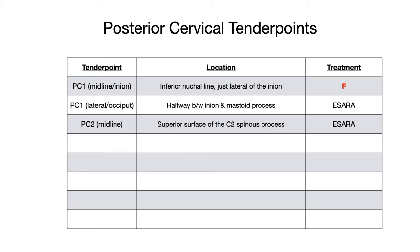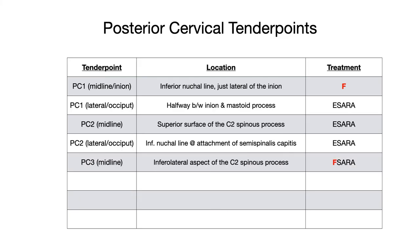PC2 midline is located on the superior surface of the C2 spinous process, and the treatment is E-CERA. PC2 lateral or PC2 occiput is located on the inferior nuchal line at the attachment of the semi-spinalis capitis muscle, and the treatment is E-CERA. PC3 midline is located on the inferolateral aspect of the C2 spinous process. The treatment is F-CERA. This is a maverick point because it doesn't follow the general rule — on the posterior part, you usually want extension to shorten the associated muscle, but PC3 doesn't follow that rule, so it's marked in red.